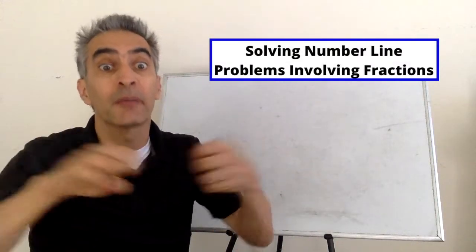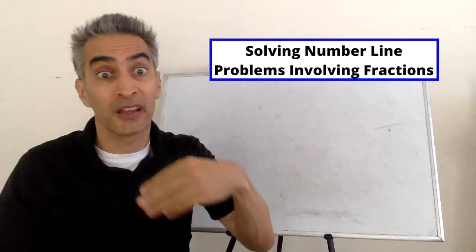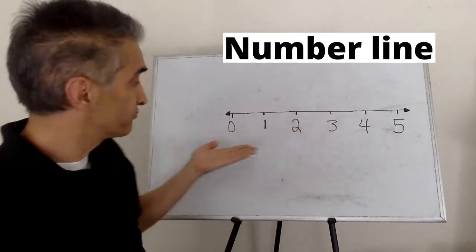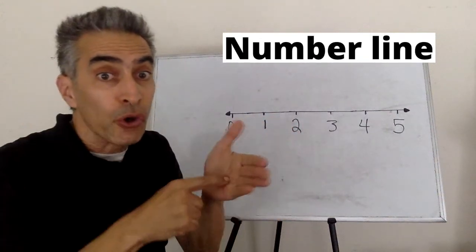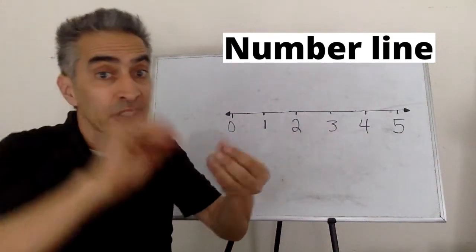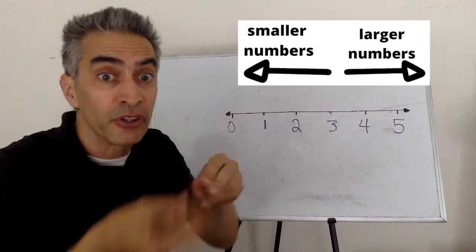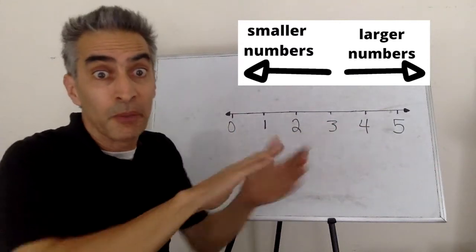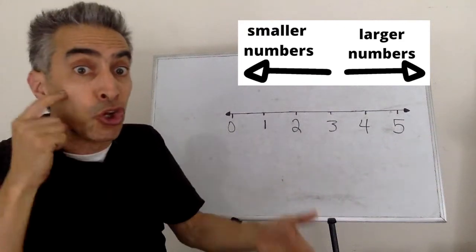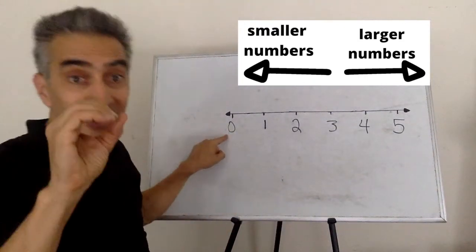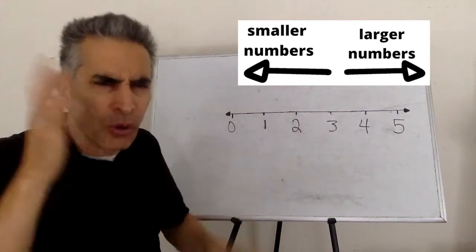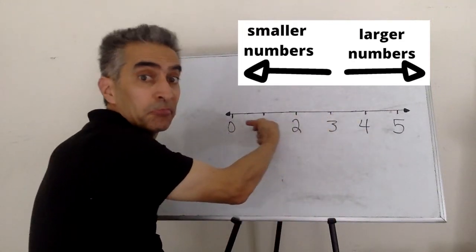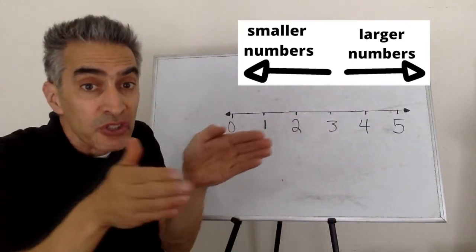Today we're going to learn about number line problems. Now you can see the number line. Notice that this 5 is the largest number because the numbers increase in size as we move to the right and they become larger. Notice that this zero is the smallest number. The numbers decrease in size as we move to the left — they become smaller.